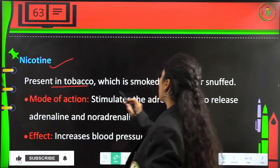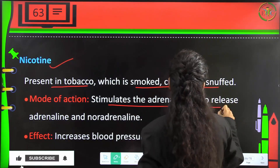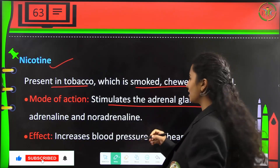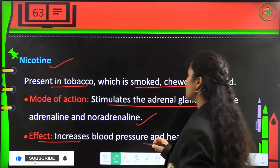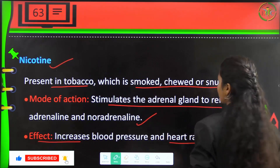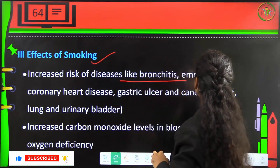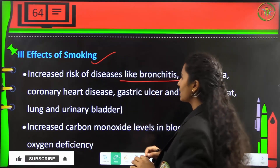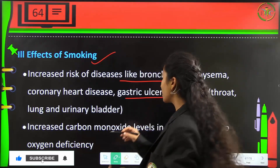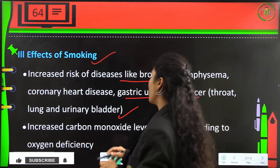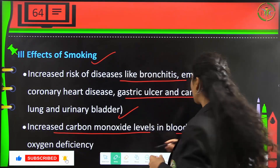Nicotine is present in tobacco, which is smoked, chewed, or snuffed. Its mode of action is stimulating the adrenal gland to release adrenaline and noradrenaline, increasing blood pressure and heart rate. Effects of smoking include increased risk of bronchitis, emphysema, coronary artery disease, gastric ulcers, and cancers such as throat cancer, lung cancer, and urinary bladder cancer. Increased carbon monoxide levels in the blood also lead to oxygen deficiency.